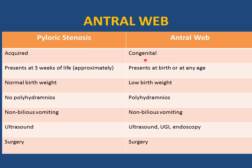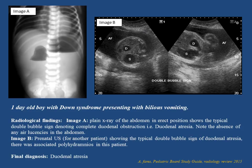Antral web can be confused with pyloric stenosis. Pyloric stenosis is acquired; antral web is congenital. Pyloric stenosis presents at 3 weeks of life; antral web may present at birth or any age depending on obstruction degree. Pyloric stenosis: normal birth weight, no polyhydramnios history. Antral web: low birth weight, may have polyhydramnios history. Both present with non-bilious vomiting. Ultrasound is the study of choice for both; antral web may also need upper GI or endoscopy. Treatment for both is surgical.